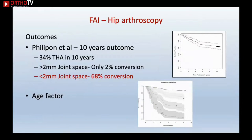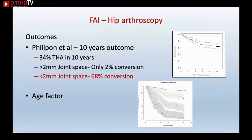A commonly cited study by Mark Philippon on 10-year hip arthroscopy outcomes showed a 34% conversion rate to total hip replacement. However, looking at subcategories, patients with joint space less than two millimetres had a 68% conversion rate, while those with well-preserved joint space in non-arthritic patients had only a 2% conversion rate.